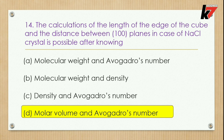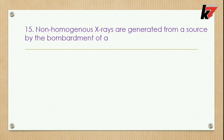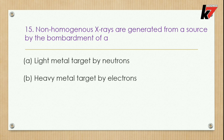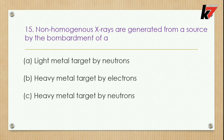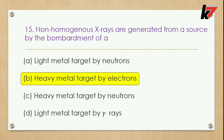Question 15: Non-homogeneous X-rays are generated from a source by the bombardment of a — options: light metal target by neutrons, heavy metal target by electrons, or heavy metal target by gamma rays. The correct option is B: heavy metal target by electrons. This is the method of bombarding to generate non-homogeneous X-rays.